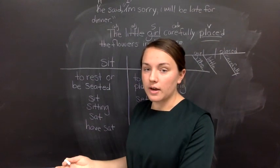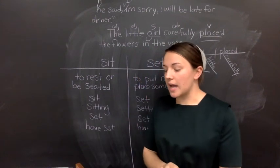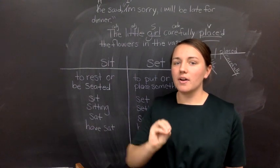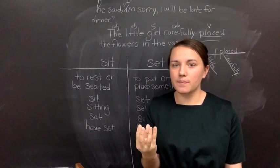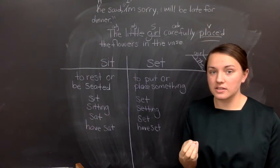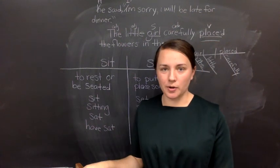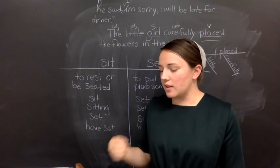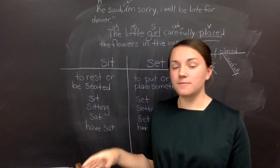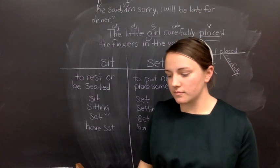You need to fill in the correct form for some sentences in your book today. Now, whenever you use a form of the word set, remember, that word means to put or place something. So you have to name the object that is being put or placed. Be careful not to miss that. In your sentences, in your book, when you write down either sit or set, if you use set, they're going to ask you to find the object that is being put or placed.